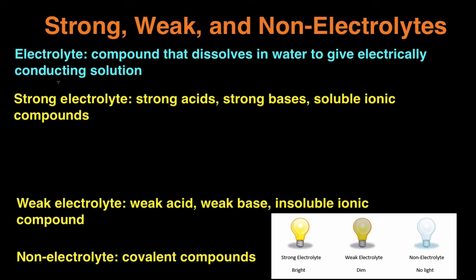There's three types of electrolytes: strong electrolytes, weak electrolytes, and non-electrolytes. Strong electrolytes are compounds that dissociate readily into ions, and as a result, the solution conducts electricity really well. And when you run a light bulb experiment with a strong electrolyte, you're going to get a bright light bulb, because the current is going to travel through the solution really well, because there's a lot of ions in there.